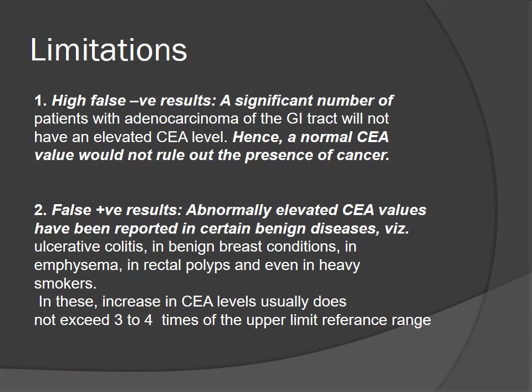Limitations: there are high false negative results — a significant number of patients with adenocarcinoma will not have elevated CEA levels, so normal CEA would not rule out cancer. False positive results: abnormally elevated CEA has been reported in certain benign diseases such as ulcerative colitis, benign breast disease, emphysema, rectal polyps, and even in heavy smokers. In these cases, the CEA value usually does not exceed 3 to 4 times the upper limit of the reference range.